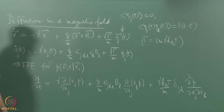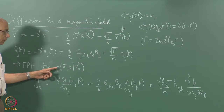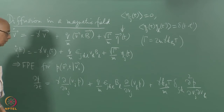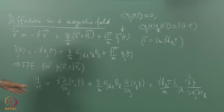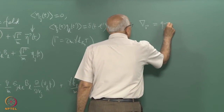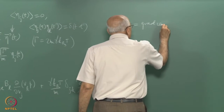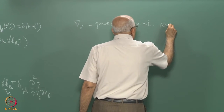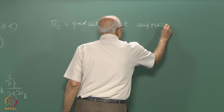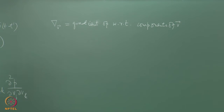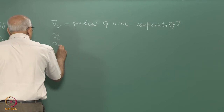That is the Fokker-Planck equation satisfied by the conditional density for a given initial velocity. The initial condition is a 3-dimensional delta function at V equals V₀. We can write this in vector form: let ∇_V denote the gradient operator with respect to velocity components. This notation avoids confusion with the position-space gradient.